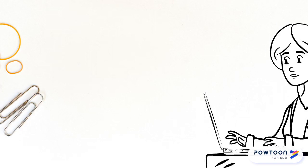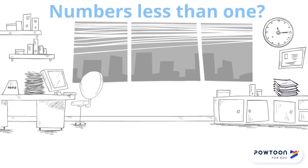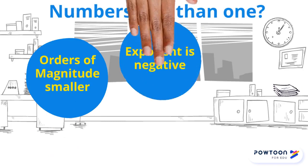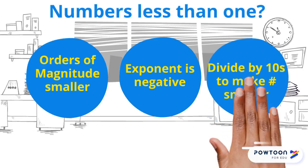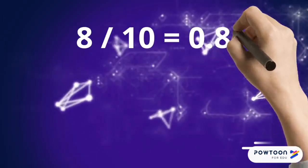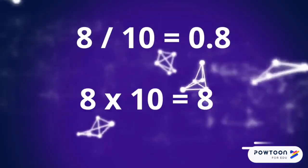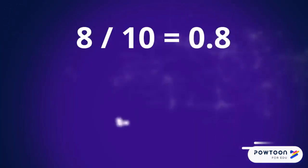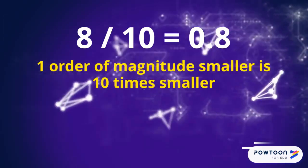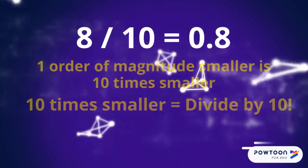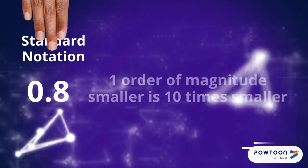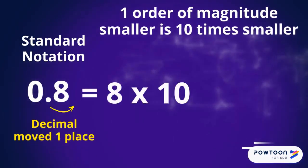How about really small numbers? The same concept is followed, but the powers of 10, or the orders of magnitude, are negative and make the number smaller by dividing by 10s instead of multiplying. 8 divided by 10 is 0.8. Divided by 10 is the same as times 10 to the negative 1. So the number 0.8 is one order of magnitude smaller than 8. One order of magnitude smaller is 10 times smaller, or divided by 10. So the number 0.8 in scientific notation is 8 times 10 to the negative 1.